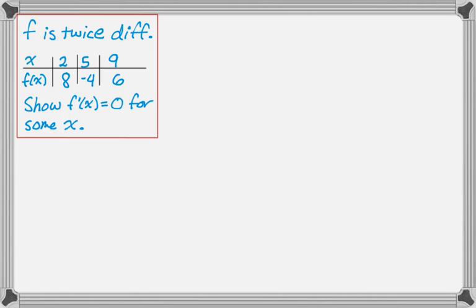So the first one is we're told that f is twice differentiable. That's a common thing. We're given these values, so we know that f(x) goes through the point (2, 8), the point (5, -4), and the point (9, 6). And our goal is to show that f'(x) = 0 for some x, which seems like a weird thing to do. So this is a Mean Value Theorem type of problem. I call these table problems, and with table problems you're almost always going to use the Mean Value Theorem at least once.